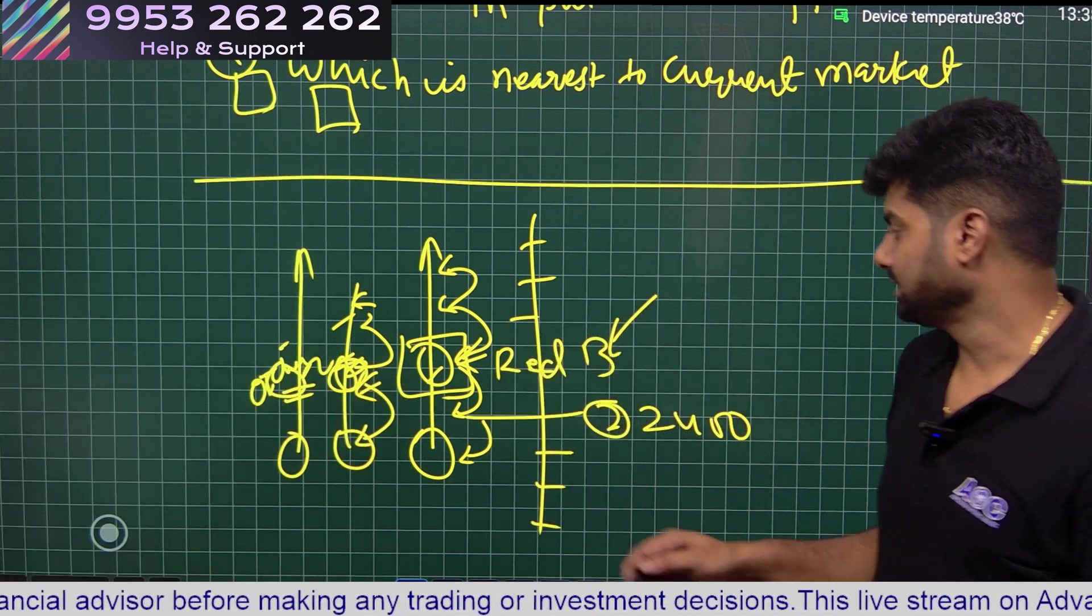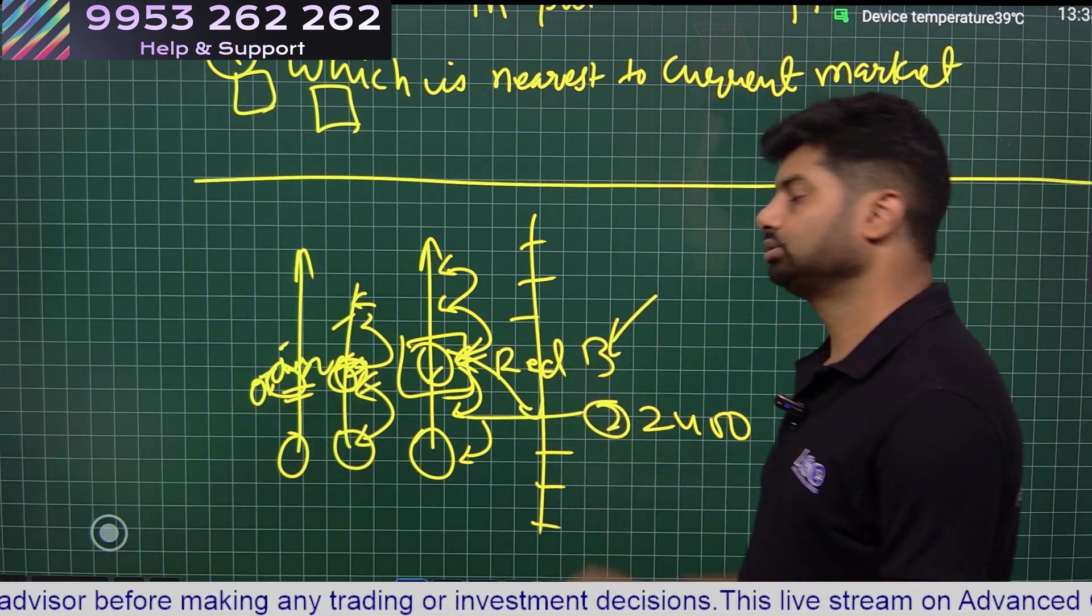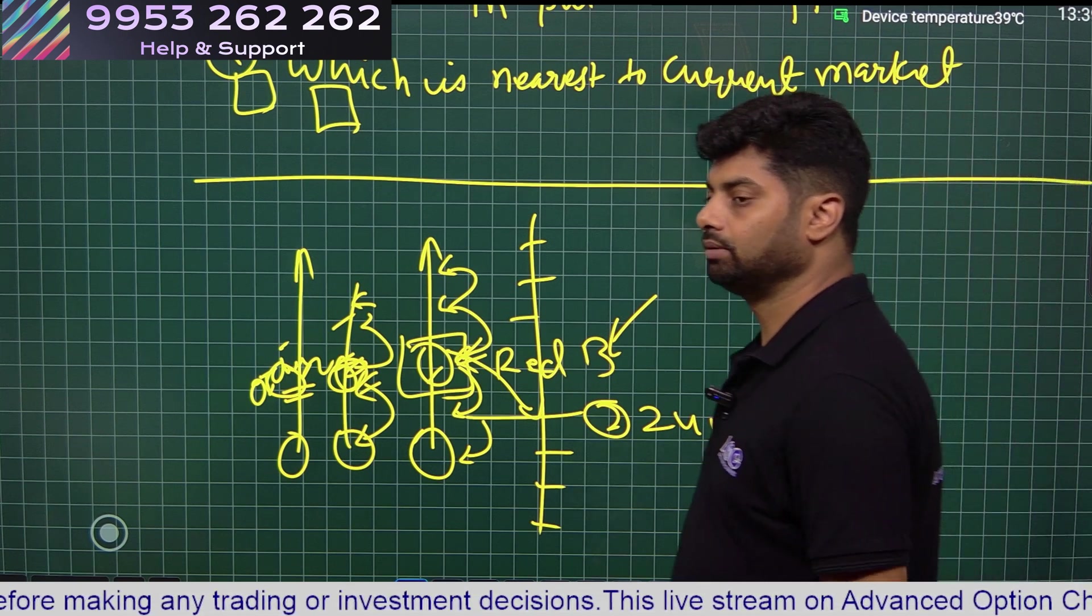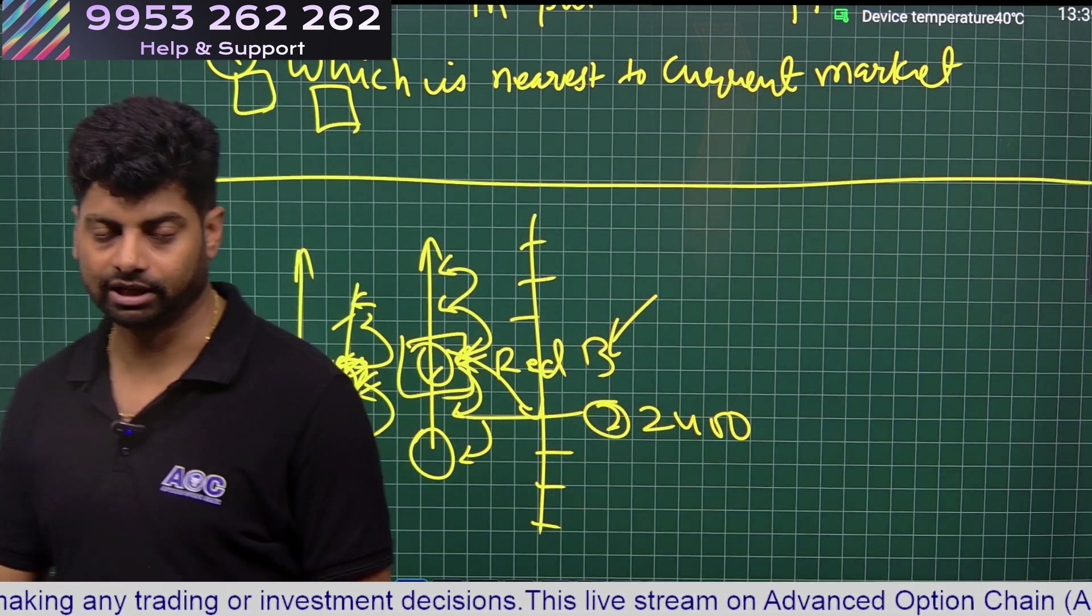Among those red boxes, whichever is nearest to the current market price will be our resistance.